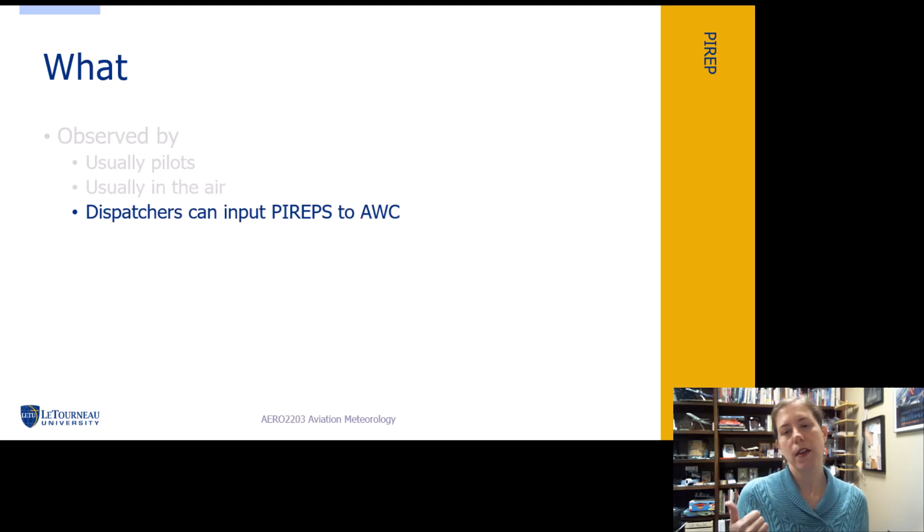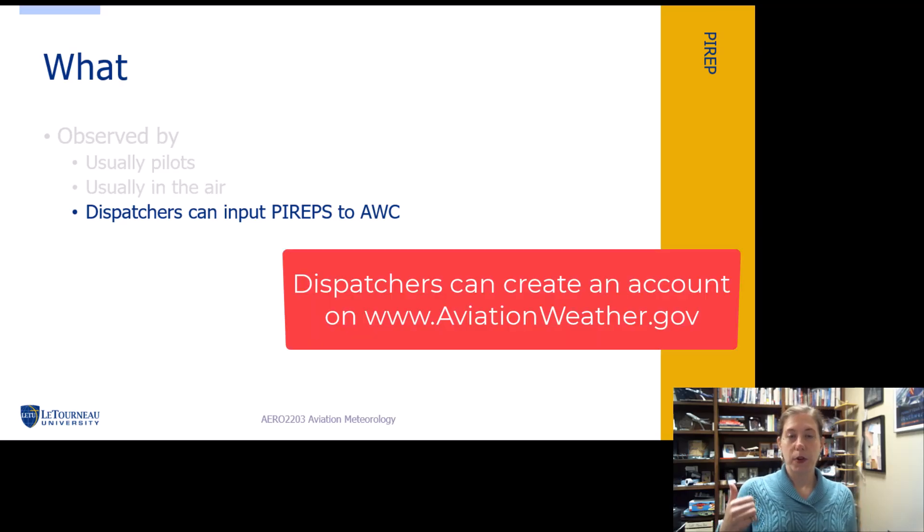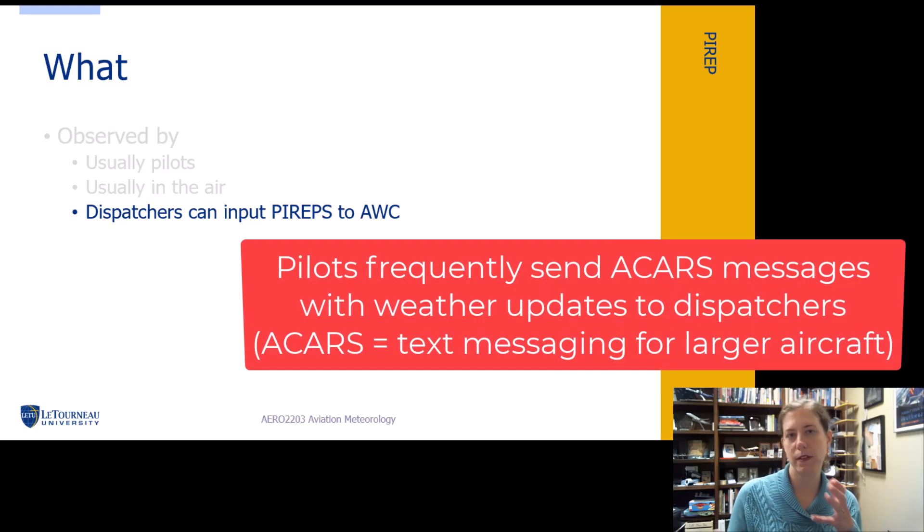Dispatchers can input pilot reports given to them through either voice or through ACARS communication, which is basically text messaging for large aircraft to send messages to the dispatcher. The dispatchers can input these pilot reports into the web on the Aviation Weather Center website, and this allows information from pilots to be inputted in another way into the system.